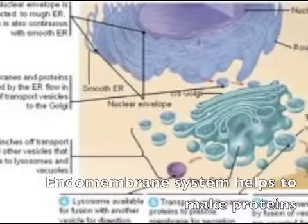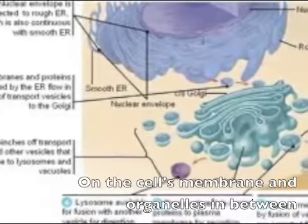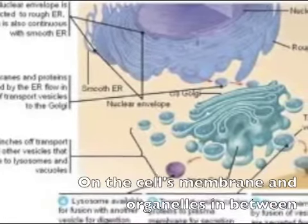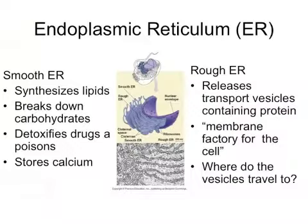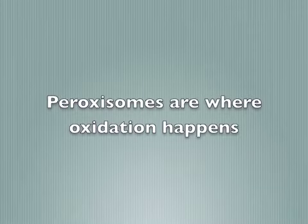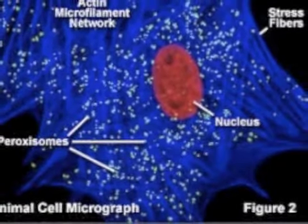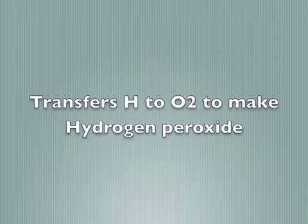The endomembrane system helps to make proteins on the cell's membrane and organelles in between. It consists of vesicles, Golgi, and lysosomes, as well as smooth and rough endoplasmic reticulum. Peroxisomes are where oxidation happens — they transfer H2O2 to make hydrogen peroxide.